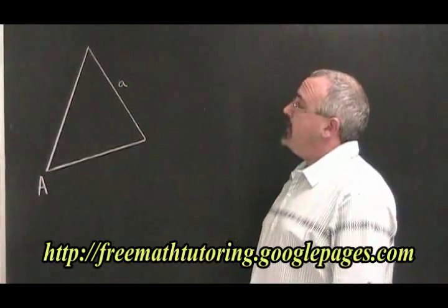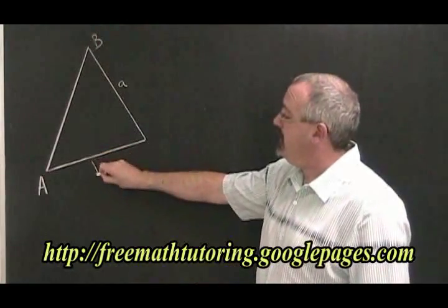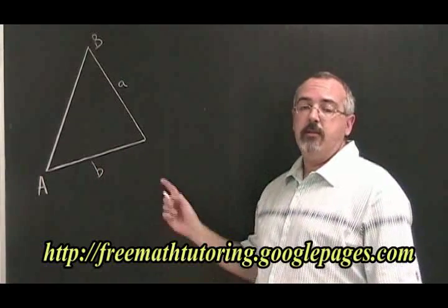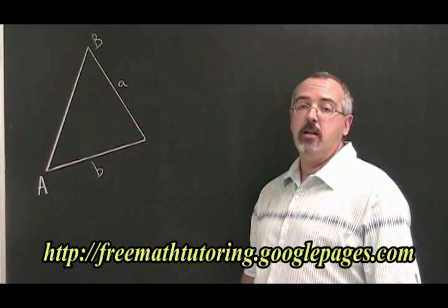So if I want to label this angle B, that means this would be side b. We will use this convention very often when we apply sine law and cosine law.